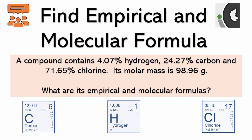Hello, welcome to this video. In this video, let us solve a common problem that asks us to find an empirical formula and a molecular formula given a ratio of elements in a compound. If you have a compound where there is 4.07% hydrogen, 24.27% carbon, and 71% chlorine, and its molar mass is 98.96 grams, we are supposed to find its empirical and molecular formula.